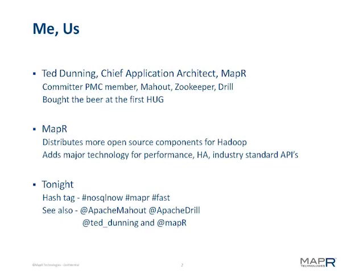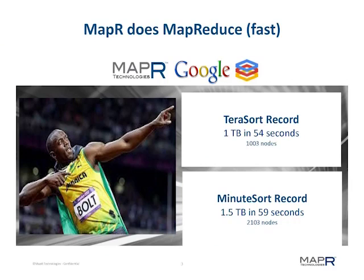I work at MapR. I also work on a lot of open source software, either through Apache or unofficially. MapR has a history of just implementing things that run fast. For instance, last fall we set the minute sort record and the terasort record — 1.5 terabytes in 59 seconds on 2,000 nodes.